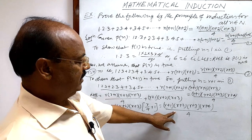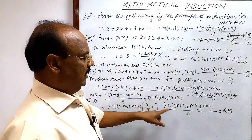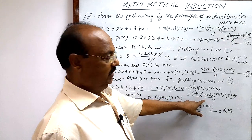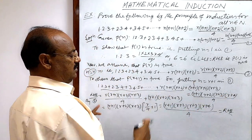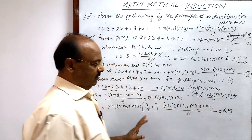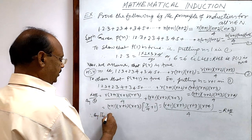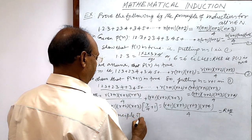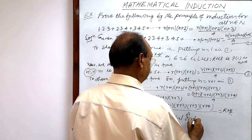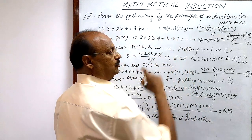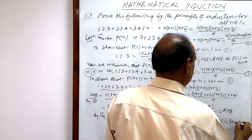This equals the right hand side. We started from LHS and arrived at (R+1)(R+2)(R+3)(R+4)/4, which is exactly the RHS we had to establish. Therefore, by the principle of mathematical induction, P(N) is true for all n.